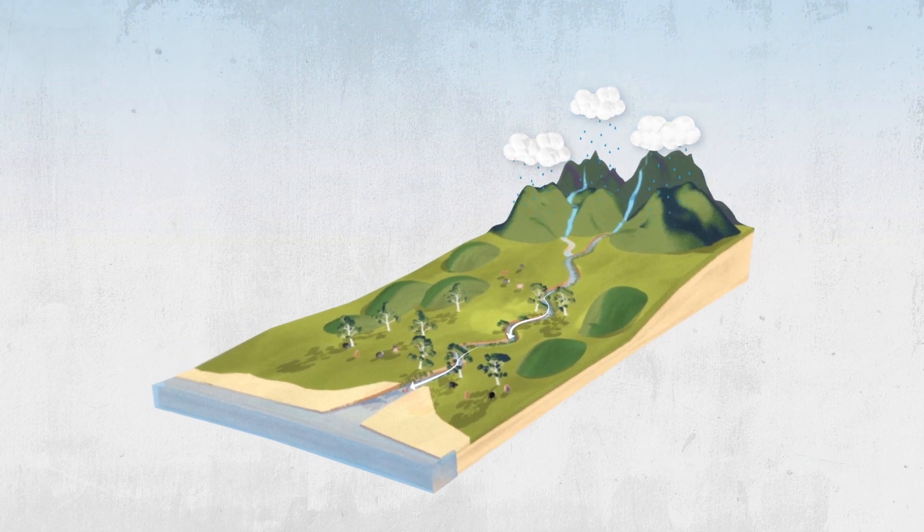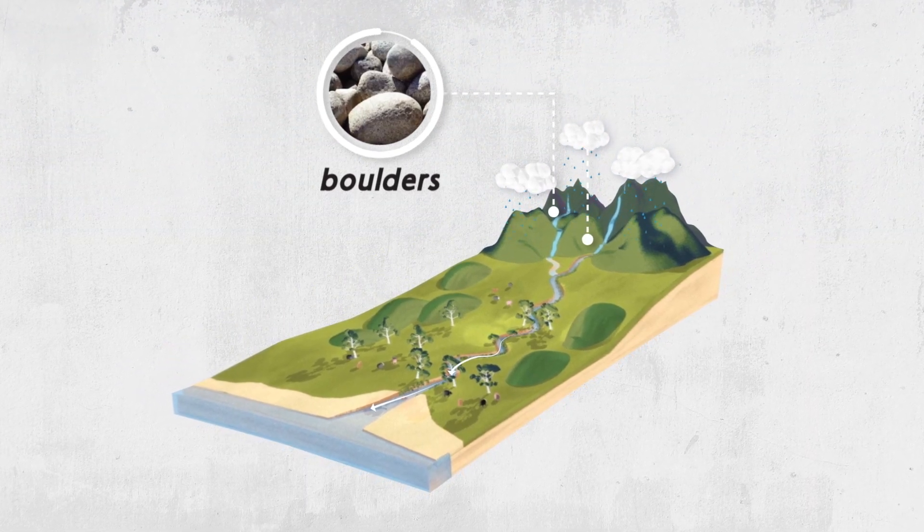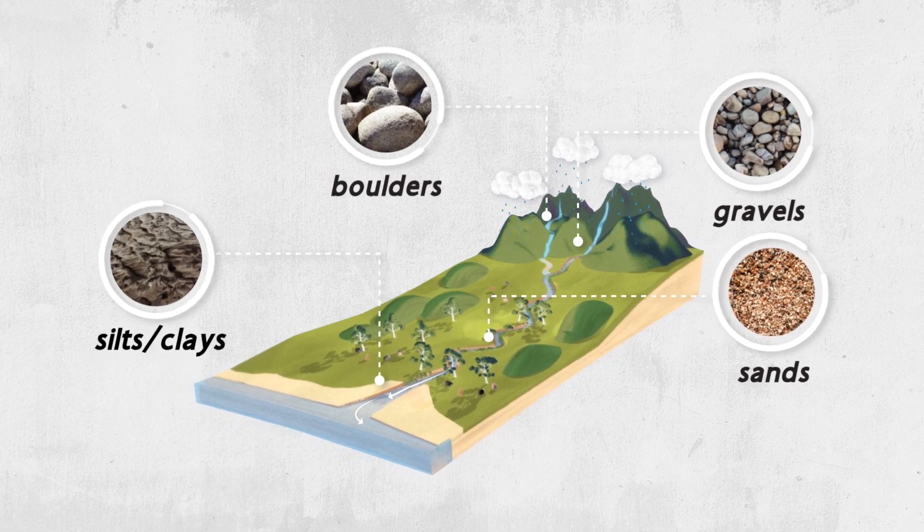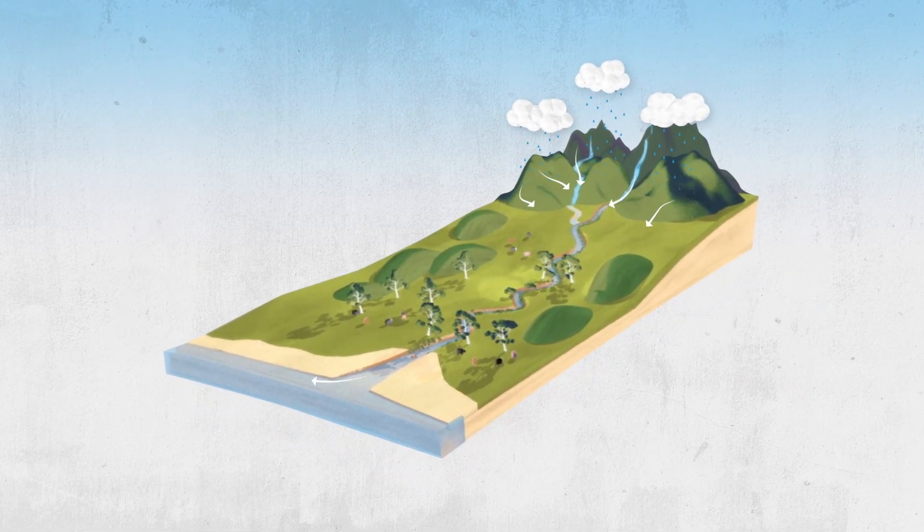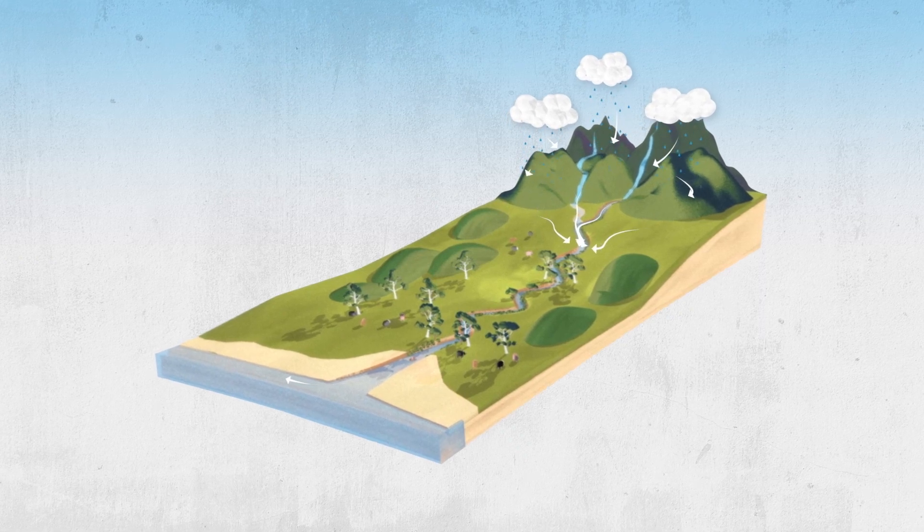As the water flows over land, it transports boulders, gravels, sands and silts and clays. The water and material carried by the river is what shapes our streams and rivers over time.